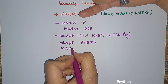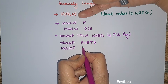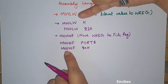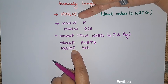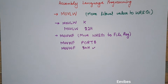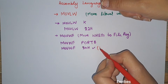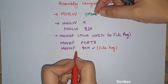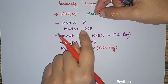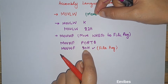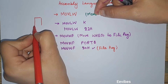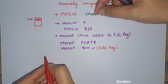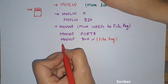If we write Move W to File and then mention a constant value like 30 hex, since we are using the Move W to File mnemonic, 30 hex acts as the address of the file register — meaning the file register at address 30 hex. If the W register still contains 22 hex, then memory location 30 hex will contain the value 22 hex.